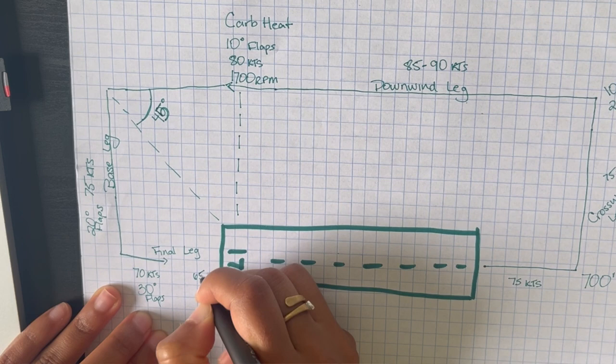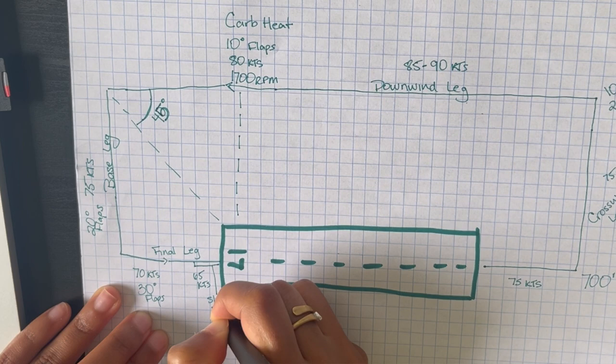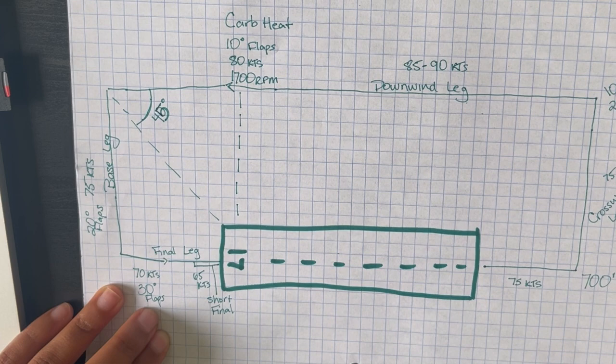Try to keep yourself aligned with that runway. There's another term which is short final, which is that last few meters away from the runway, and you're going to want to maintain about 65 knots there. Now you're going to land. I'm not going to get into specifics on that because I'm still trying to figure it out myself.